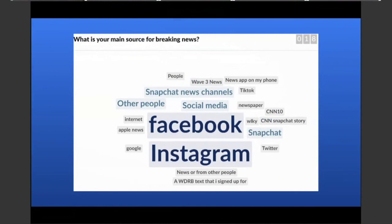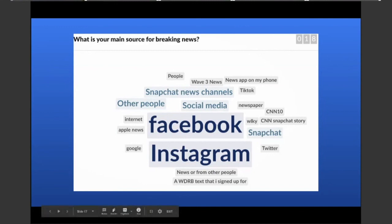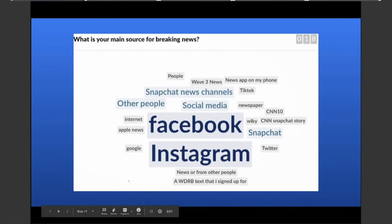I did a news media literacy workshop with a group of juniors in high school last week. I did a Slido poll and had them type in where they like to get their breaking news, and they could enter more than one answer. This is what came up — which doesn't surprise anyone who works with students. Facebook and Instagram are doing very little to make sure that their content is actually the truth, and that's where most of our students are getting their news. We need to talk with them about reliable news sources. Several of the students mentioned sources from a school not too far from Louisville, and as Sarah said, this is pretty frightening.